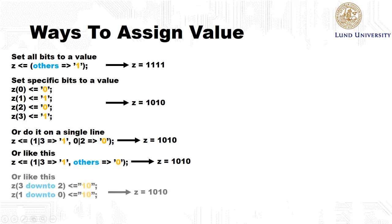We can also assign a part of the signal bus to a specific value. So here we set the upper two bits, bit 3 and 2, to the value 1, 0. Then we set the lower two bits, bit 1 and 0, to 1 and 0.